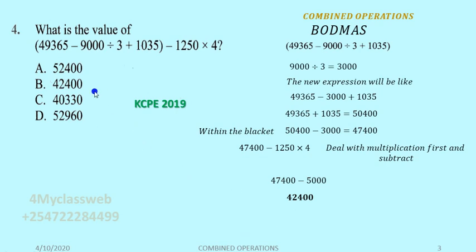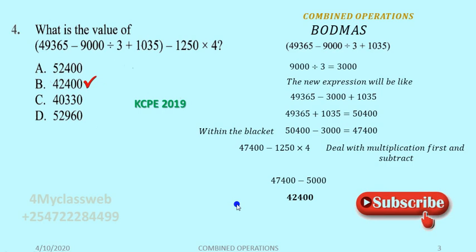Going back to the choices, you will find that 42,400 is given as choice B. Remember the rule of BODMAS: Bracket, Of, Division, Multiplication, Addition, and Subtraction. Any time you have a problem with combined operations, that is the order to follow. After you deal with the bracket, continue with the rest in order. Thank you very much — continue subscribing to this channel and get more worked-out examples. Thank you very much.